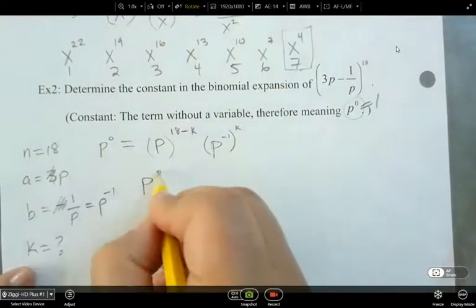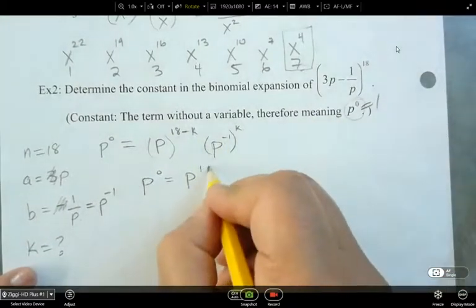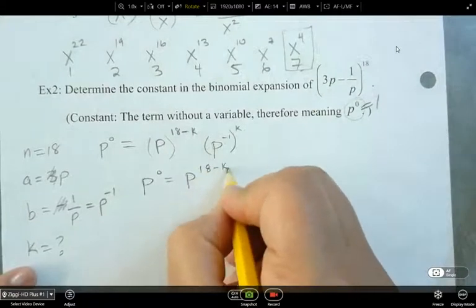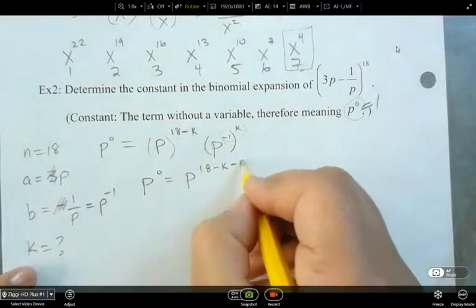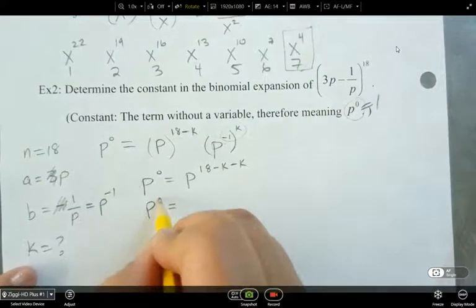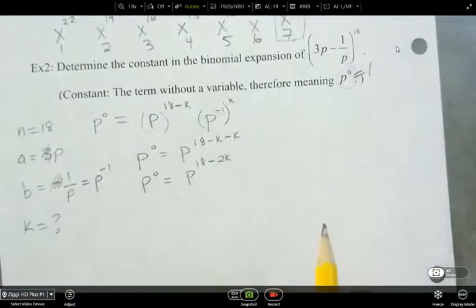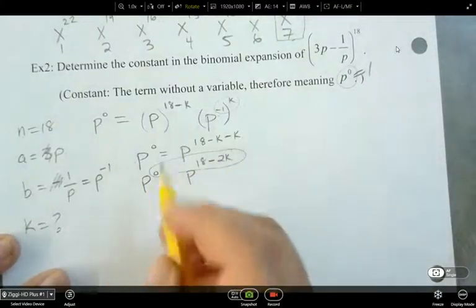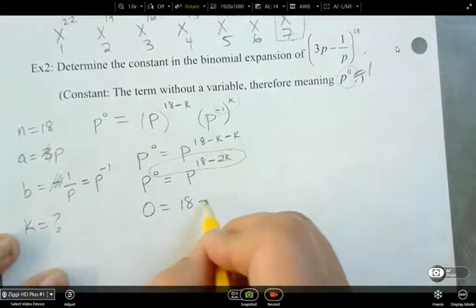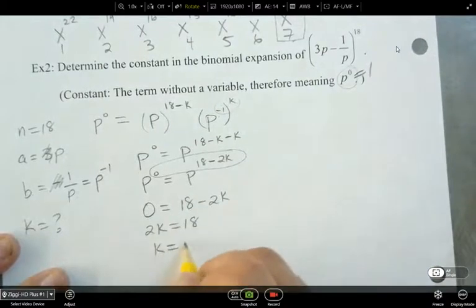All right, so p to the power of 0 is equal to, and just combine the exponents here. So this is 18 minus k, and that's minus k because you multiply the two together. So p to the power of 18 minus 2k. And now let's drop the bases and solve the exponents here. So I'm going to have 0 equals 18 minus 2k, and then 2k equals 18, k equals 9.